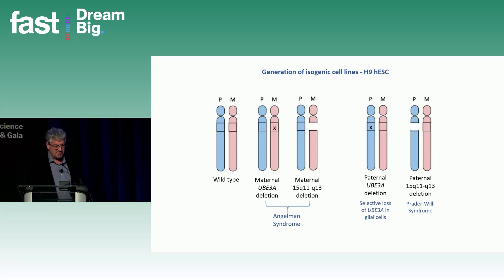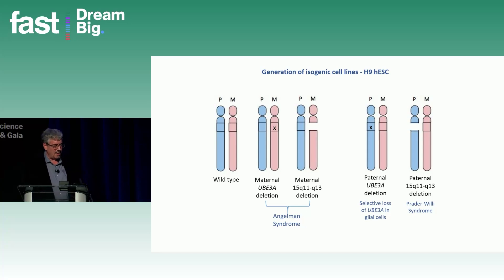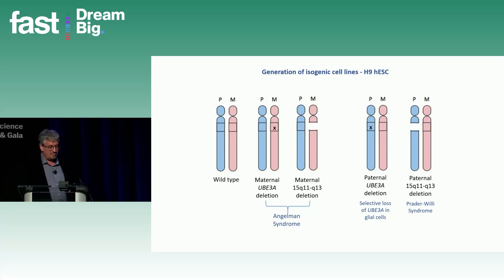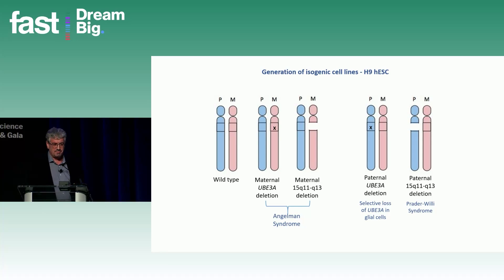We can restore expression of specific genes in the deletion line or knock down expression using ASOs in the UBE3A deletion line to identify which specific genes are involved in those phenotypes, hopefully spurring development of other therapeutics. Regarding mouse models, although UBE3A deletion mice have existed for a long time, it's difficult to generate a full deletion mouse — several groups are working on it. If we can identify specific genes that play important roles, that may inform better mouse models, as you could target UBE3A plus one or two other genes rather than making the full deletion.